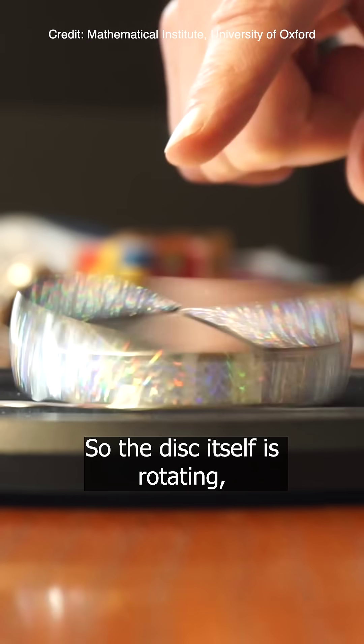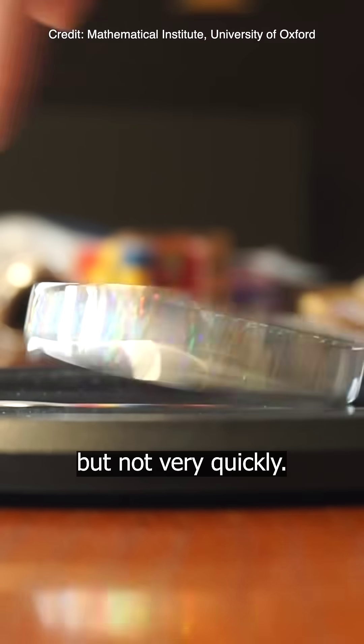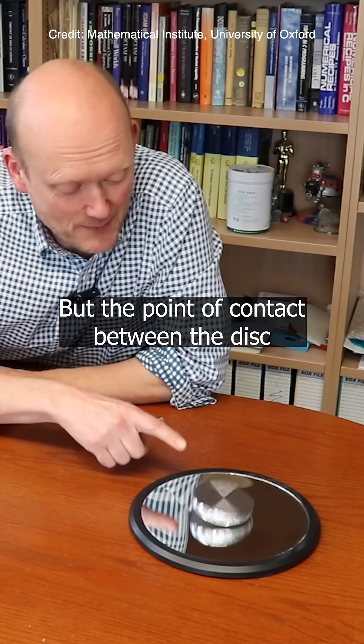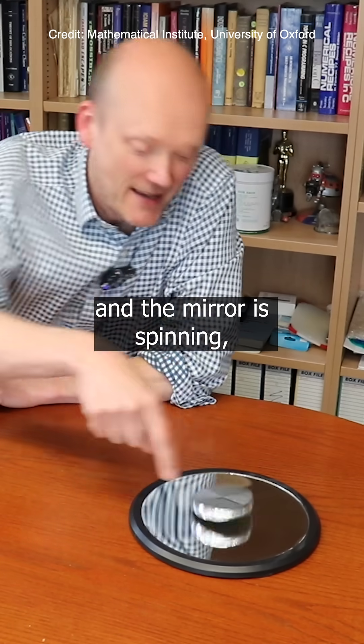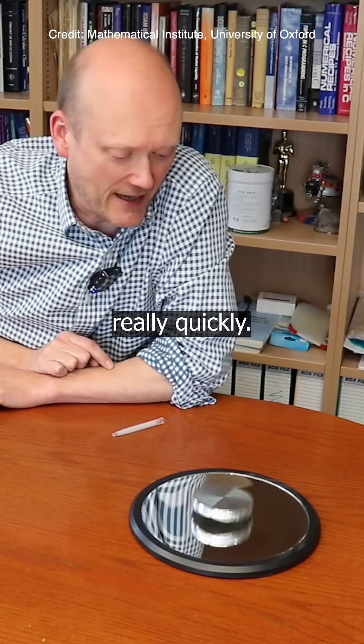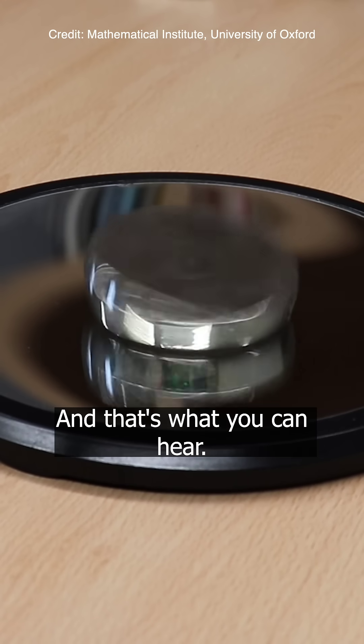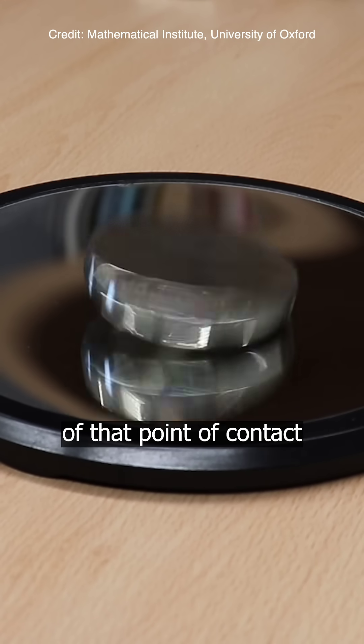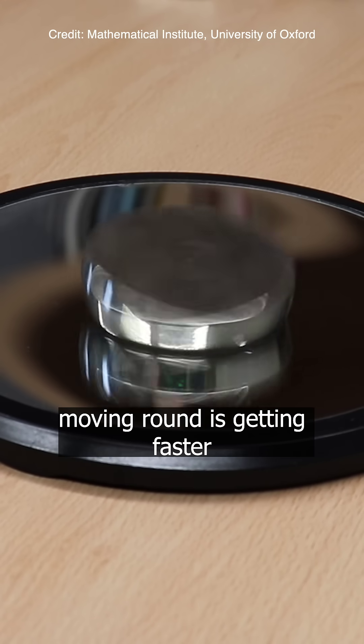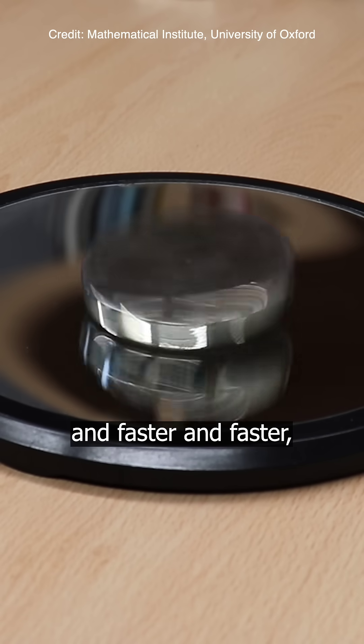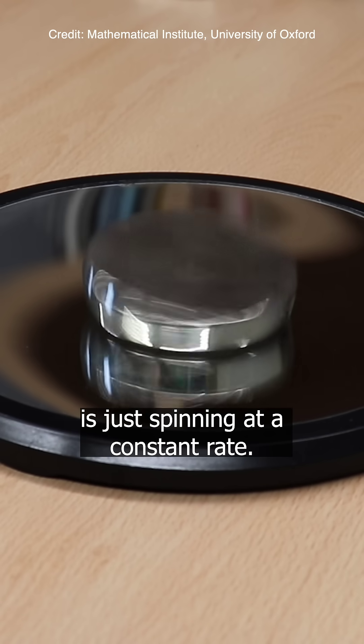So the disc itself is rotating but not very quickly, but the point of contact between the disc and the mirror is spinning really quickly and that's what you can hear. That frequency of that point of contact moving around is getting faster and faster even though the disc itself is just spinning at a constant rate.